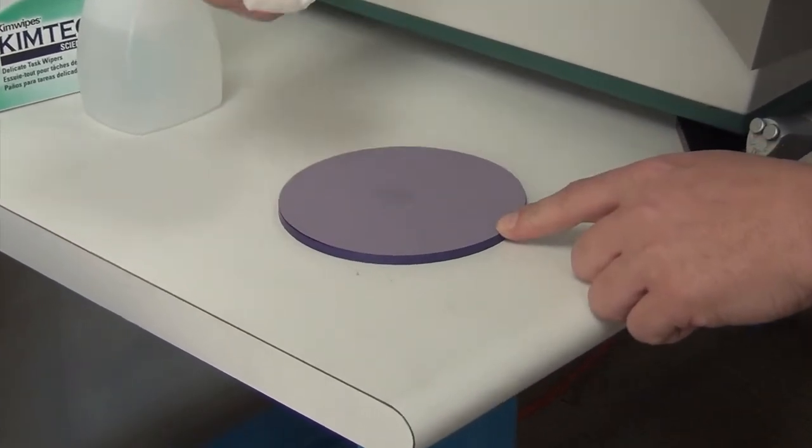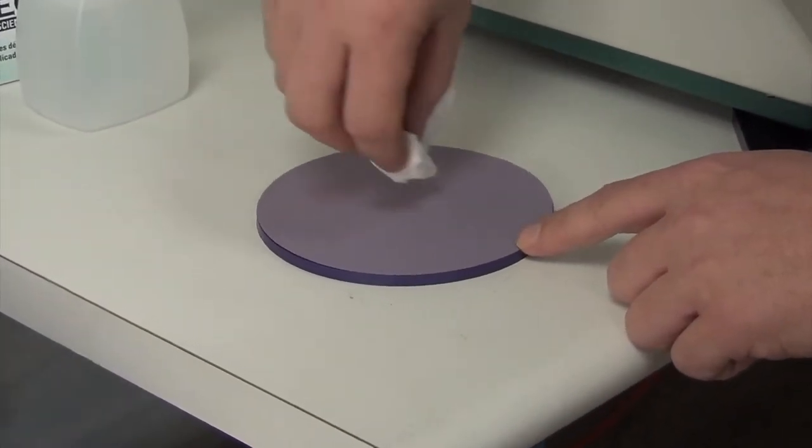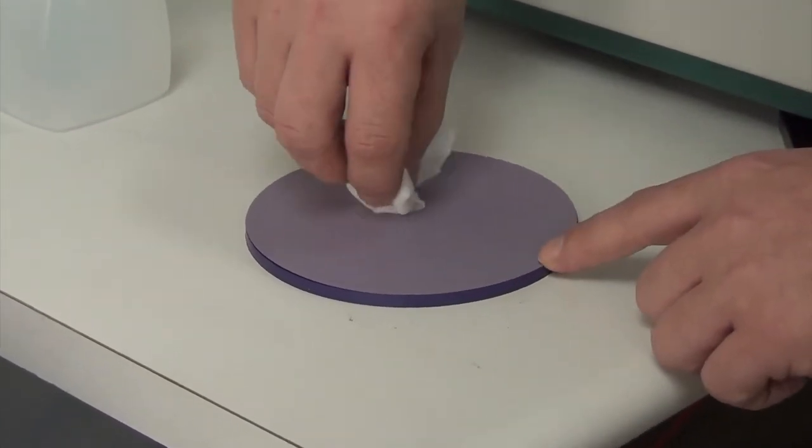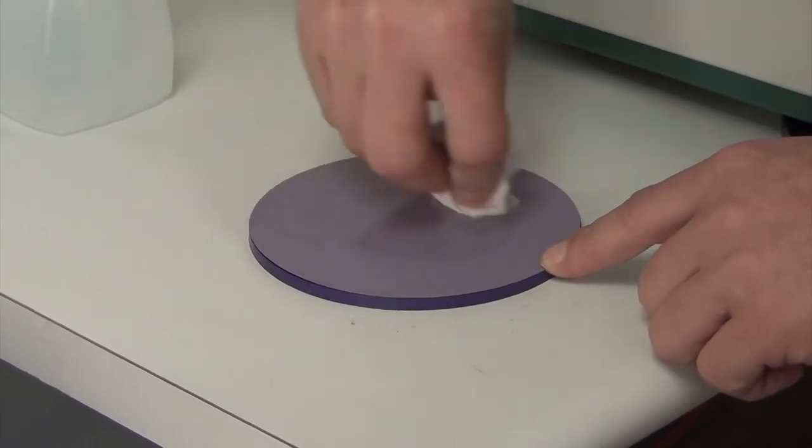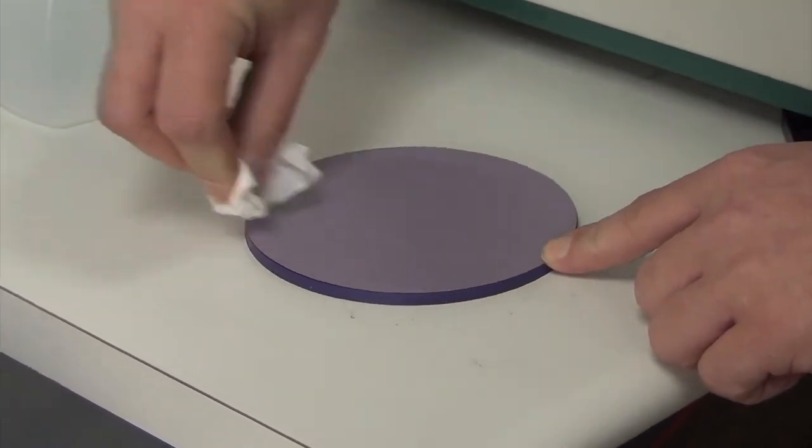One method to prevent air bubbles trapped between the film and the pad is to use some alcohol or water and start with small circles and work your way out. That helps ensure there aren't any trapped bubbles.